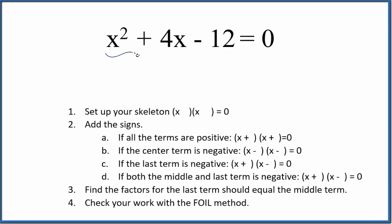Let's factor the equation x² + 4x - 12 = 0. We use these steps here to guide our work. First step, we're going to set up a skeleton equation that's going to look like this right here.